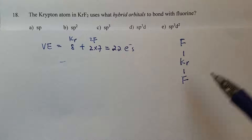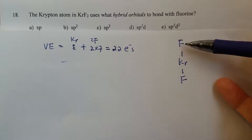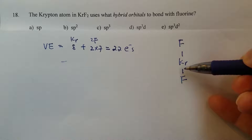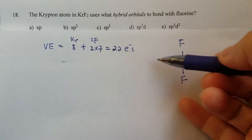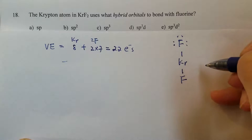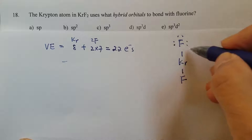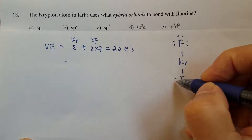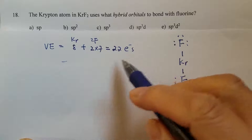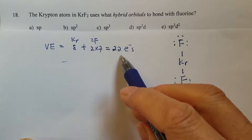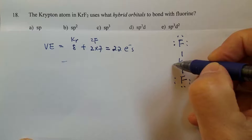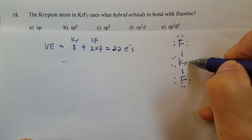Let's draw the Lewis structure. So far we have two bonds, that's four electrons. Of course, there are many more valence electrons to be assigned. We'll work on the peripheral atoms first to satisfy the octet rule. Do the same for the other fluorine. Now you see a total of 18 electrons assigned. 22 minus 18 still leaves 6 electrons, so we have to place them as lone pairs on the central atom, which is krypton.